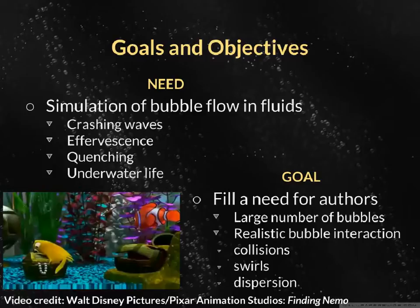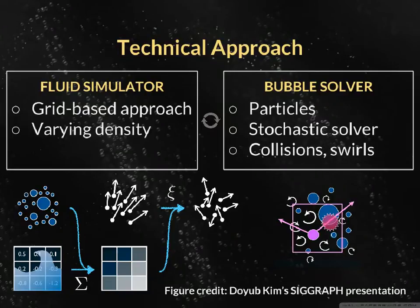In many situations, convincing simulation requires a large number of bubbles and realistic bubble interaction, including collisions, swirls, and dispersion. Our implementation is based on an existing fluid simulation using a grid-based approach. This simulation is modified to support varying fluid density. Bubbles are simulated individually as particles.